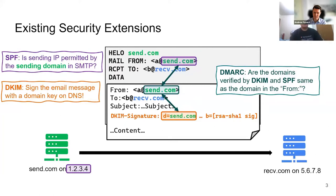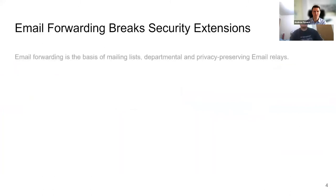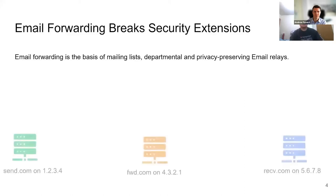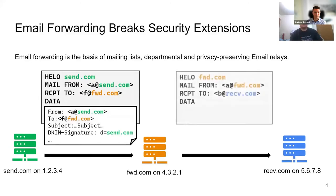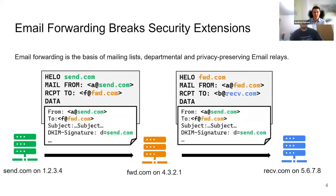So far, it looks promising when the sender is directly sending to the receiver. But we are here to talk about email forwarding today. Email forwarding is an equally important feature to directly delivered emails. It enables mailing lists, aliases, and relay services for many scenarios. It works just like the previous example, and the only difference is there are additional hops in between the original sender and the final receiver.